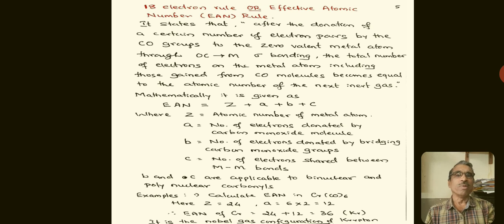Example: calculate the EAN of chromium hexacarbonyl. The atomic number of chromium is 24. Six carbonyl groups each donate 2 electrons, so A = 6 × 2 = 12. Therefore, EAN of chromium = 24 + 12 = 36, which equals the atomic number of the noble gas krypton.